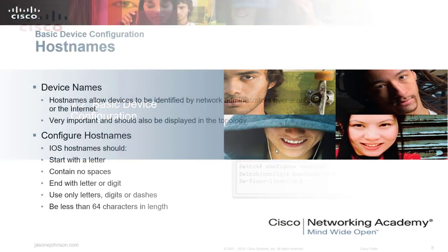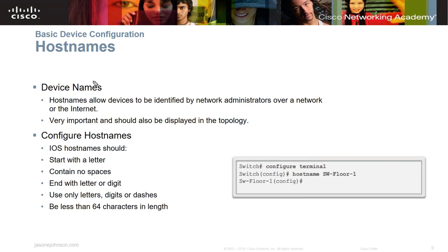Now let's look at 2.2 basic device configuration. Device names — hostnames allow devices to be identified by network administrators over a network or the internet. You'll want to configure the device name so it makes some logical order. For example, if you have a router on the third floor, you might name it 'third-floor-router' or put the floor and building name. Instead of leaving it as just 'switch,' you would change the hostname to something like 'sw-floor-one' so you know exactly where that device is located.